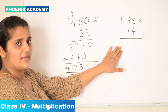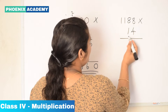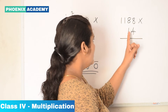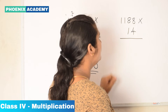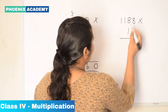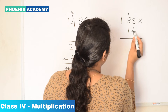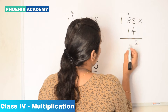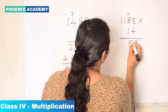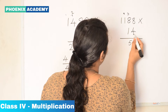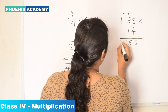Let's multiply this also: 1,188 with 14. First we multiply 1,188 with 4. 4 times 8 is 32. Again 4 times 8 is 32, plus 3 carry forwarded gives 35 — carry forward 3. 4 times 1 is 4, plus 3 is 7. 4 times 1 is 4.